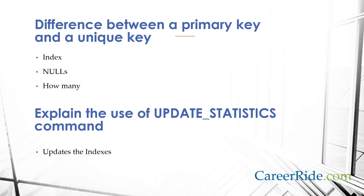Difference between a primary key and a unique key: Both keys enforce uniqueness of the column on which they are defined, but there are a few differences. First, a primary key creates a clustered index on the column by default, whereas a unique key creates a non-clustered index by default. Second, a primary key does not allow nulls, whereas a unique key allows one null in a table. Third, we can have only one primary key in a table, whereas many unique keys are possible in a table.